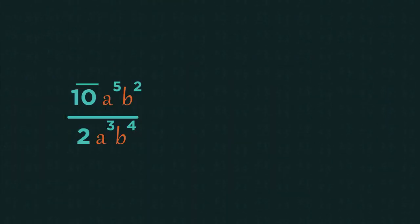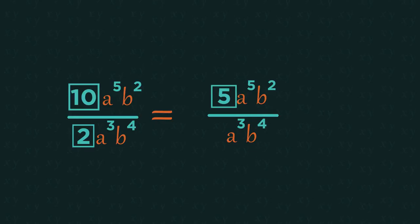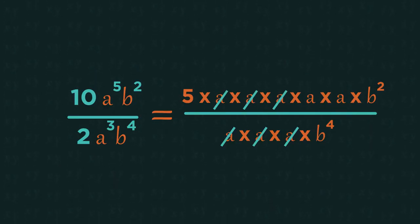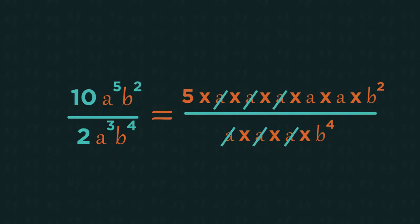For division, you can cancel out the numbers exactly as you would with fractions. And we can also cancel out letters. So, 10 divided by 2 is 5. And then, because we have 5 a's in the numerator and there are 3 in the denominator, this means we can cancel out 3 of the a's from both the numerator and denominator, leaving just 2 a's in the numerator.